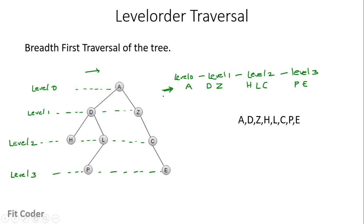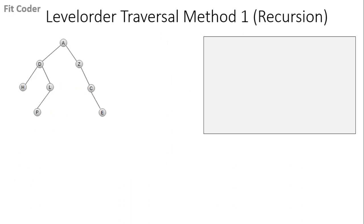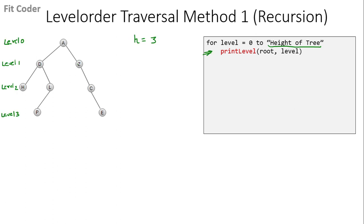Now let's understand the algorithms to find the level order traversal. We'll discuss two methods — the first method uses recursion and the second method uses a queue. In the first method we have a for loop which runs from level 0 till the height of the tree and calls the function print level.